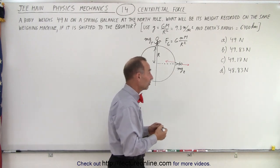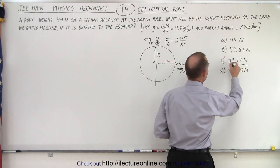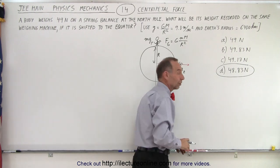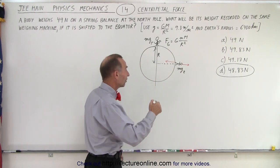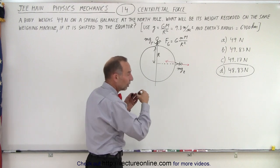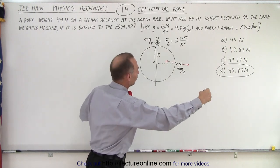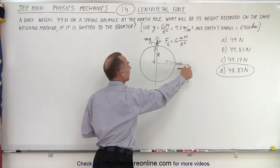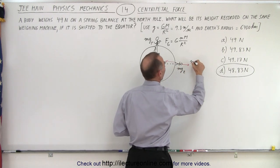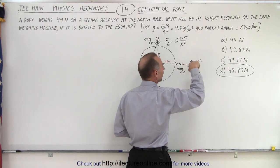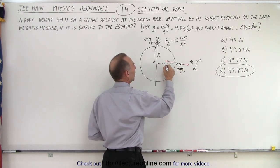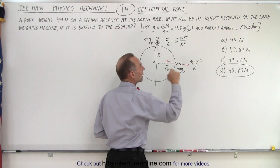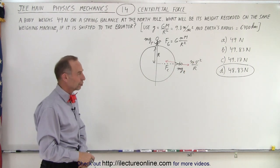Because of that, the answer is going to have to be less at the equator compared to the North Pole. And when you look at the answer, there's only one answer that is less. That's answer D, which is the correct answer. So you don't even have to calculate anything. You just have to realize at the equator you weigh less because you're going around the circle, which appears that there's this fictitious force pulling outward. You subtract that from this. This is, of course, mv squared over r. v would be the rotational motion of the Earth. You subtract that from the centripetal force, and you get the answer less than 49 newtons.